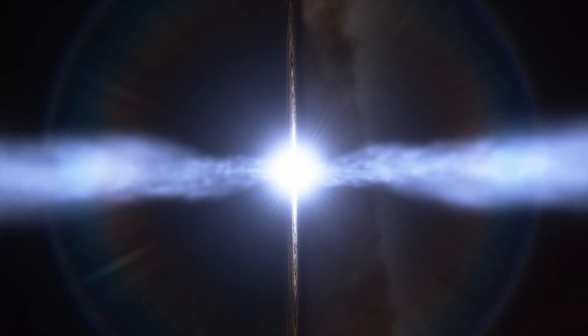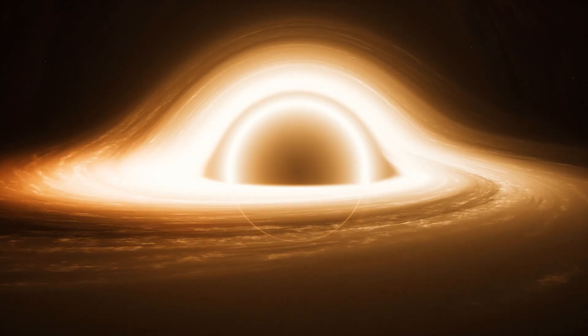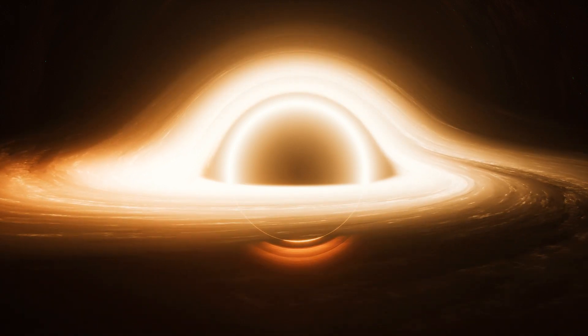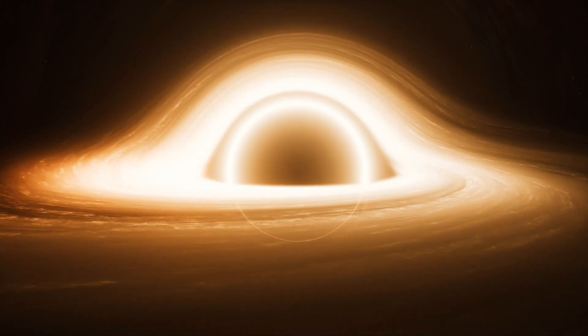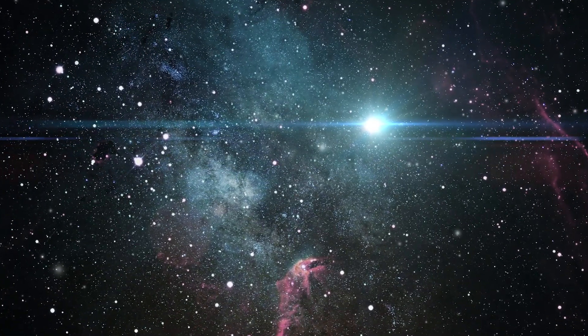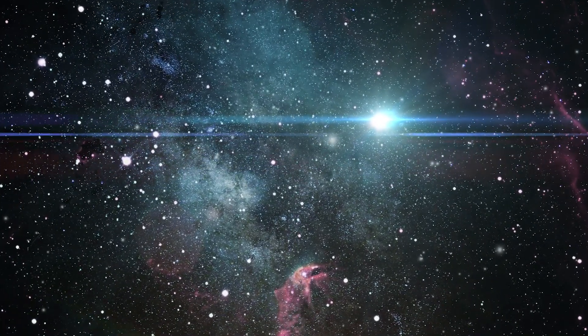It contains as many as 1,000 individual galaxies, and its galaxies also have an abnormally high rate of star formation. Perhaps the most interesting galaxy in the cluster is the central galaxy, called Phoenix A. Star formation in Phoenix A is over 700 times higher than in the Milky Way.